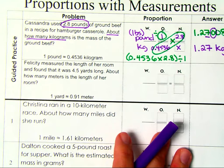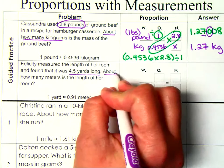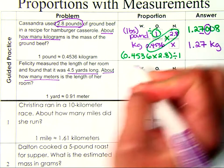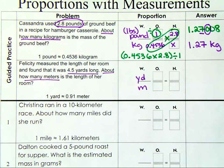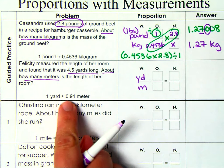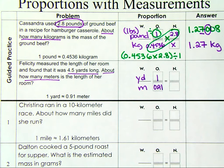Alright, let's keep going. It says, Felicity measured the length of her room and found that it was 4.5 yards long. About how many meters, so that way we know that we're comparing yards to meters, is the length of her room? So again, the original ratio is the math chart fact, what they're giving us. For every 1 yard, we have 0.91 meters. So that 4.5 is going to be right here with the yards.